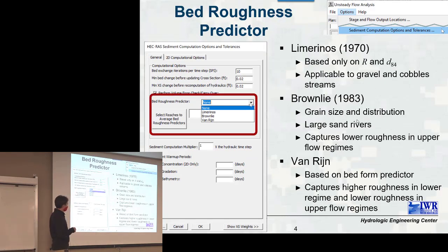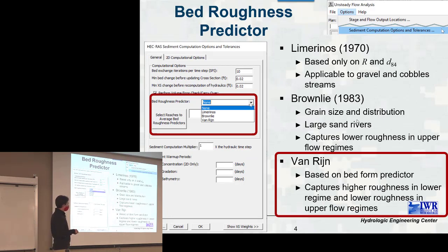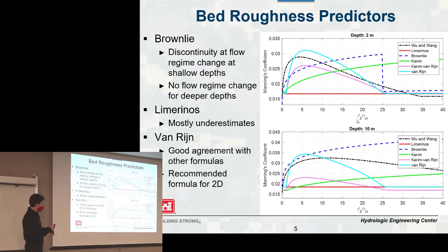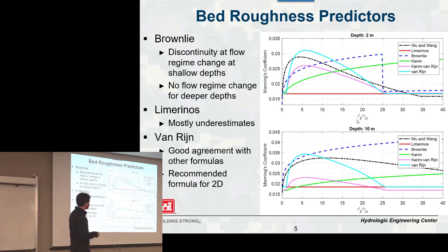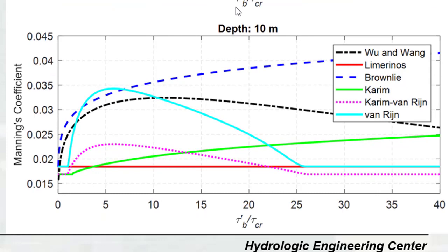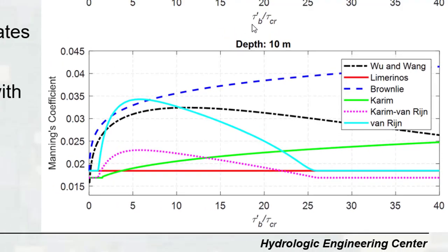Bed Roughness Predictors — we have three options. I recommend the Van Rijn method for 2D. The Lee Marino method is really for gravel and cobble streams; it only takes into account two variables: the hydraulic radius and D85, the 84th percentile diameter. The Brownlie formula is okay, but there's a discontinuity between the lower and upper regime that I don't like. This is a comparison of different methods — I actually have all of these programmed in the code, so maybe we can add the other methods in a subsequent version. In general, the Van Rijn one compares pretty well, and even though it's older, it's pretty good. The one I recommend right now for 2D is the Van Rijn one.